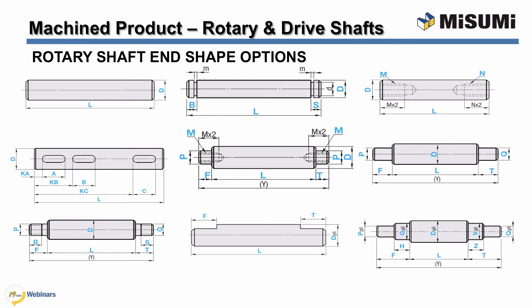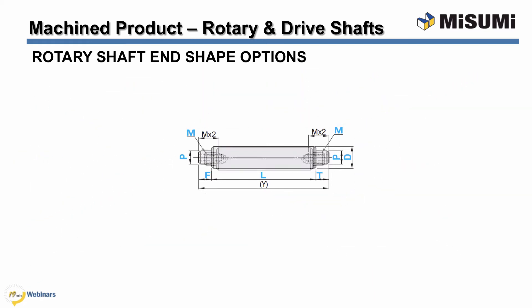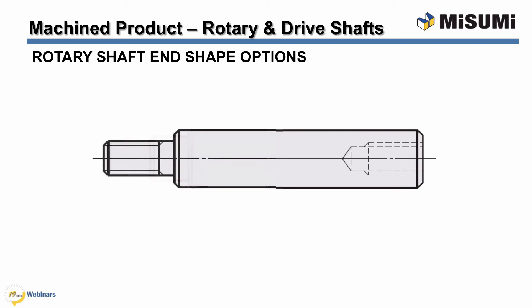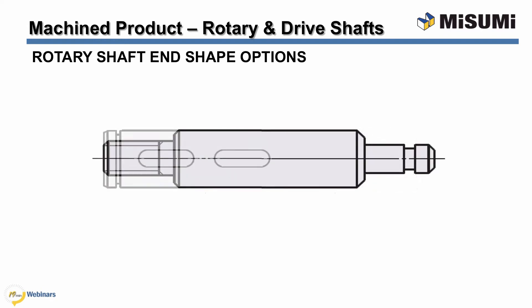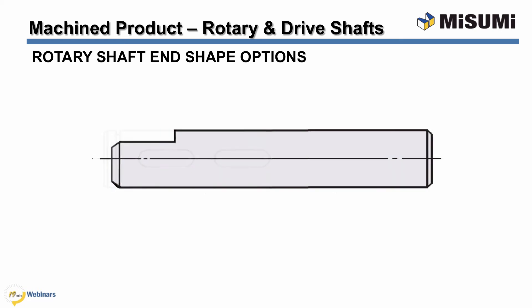Misumi offers many end shapes and features in which the blue dimensions can be configured in as little as 0.1 millimeter increments. Each specification you make will be represented by a digit in your universally recognized part number. This is just a glimpse of the variety of rotary and drive shafts that we offer. With Misumi, you are not restricted to a set shape or dimension. You can configure each end of the shaft differently with finishes like double stepped, tapped ends, threaded ends, stepped with a retaining ring groove, multiple keyways, and many other variations configurable to meet your unique design and application needs.